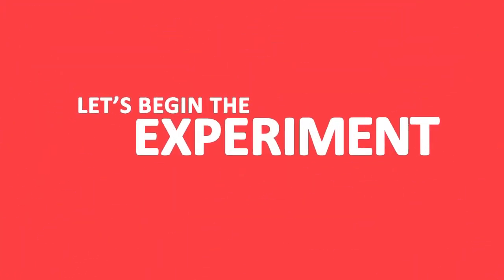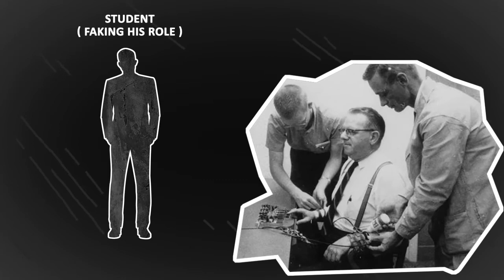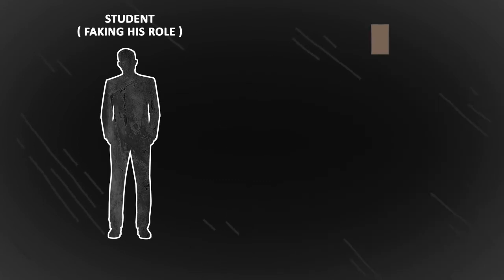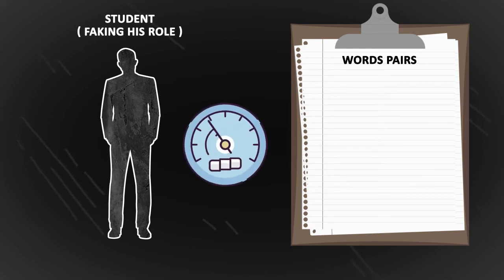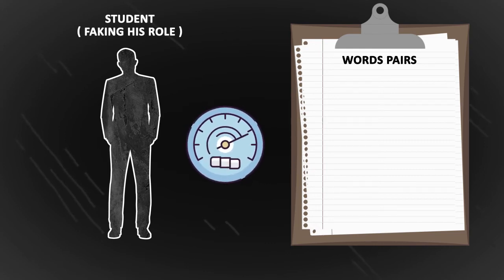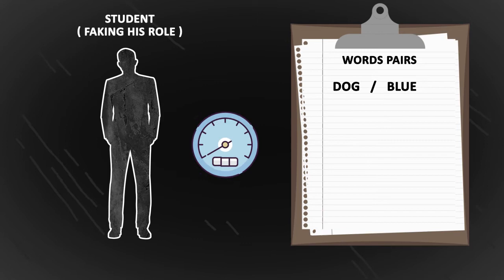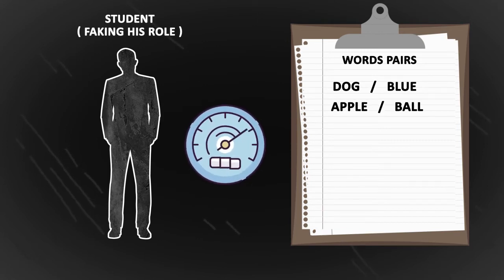Now, let's begin the experiment. The student, who was faking the role, was strapped to a chair with electrodes on the arms. He is given a list of word pairs, and he has a few minutes to learn and memorize these pairs. For example, dog could be paired with blue, and apple could be paired with ball.